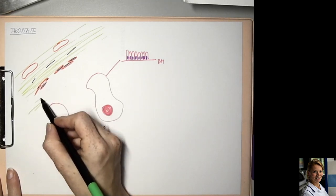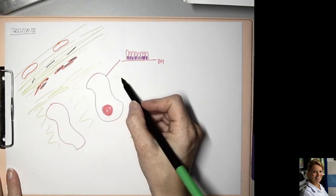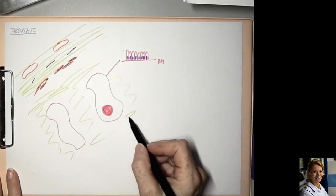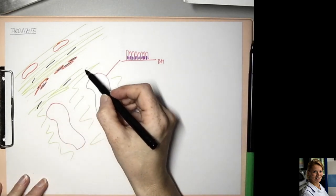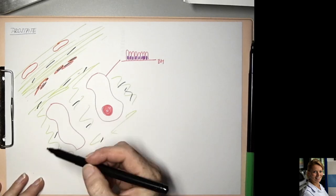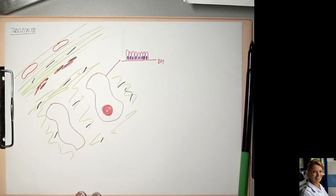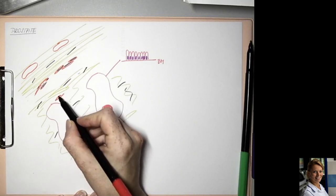So there are collagen fibers and elastic fibers. And among these fibers you can find smooth muscle cells.